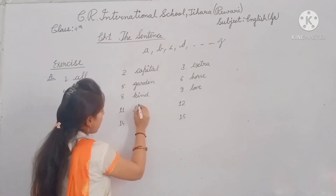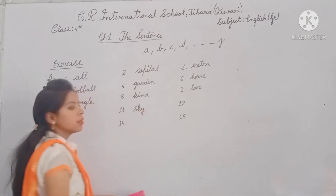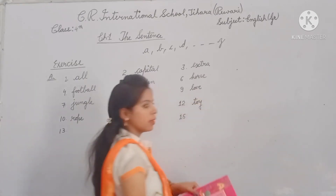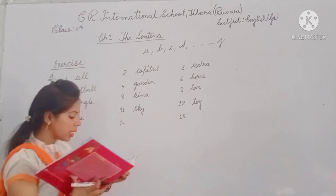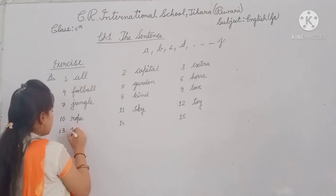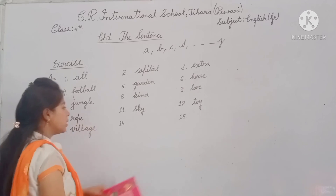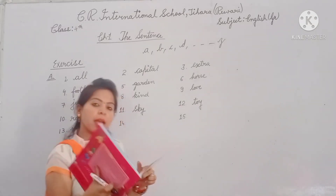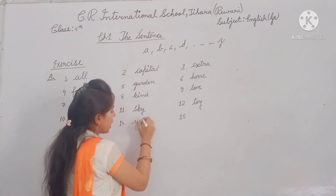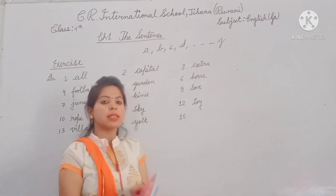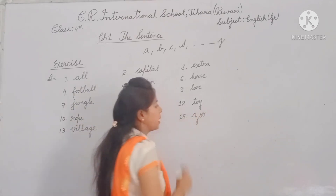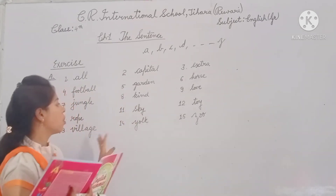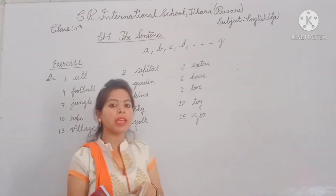S — we have 'Sky,' so at number 10 we write 'Sky.' Then T — we have a word there. Next, our last word — Z — we have 'Zoo,' so at the last number we write 'Zoo.' Our exercise is now complete.